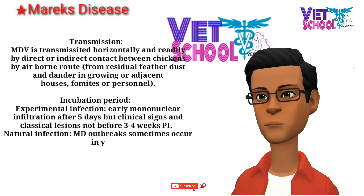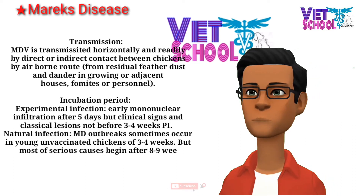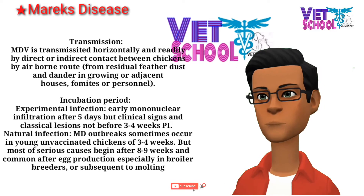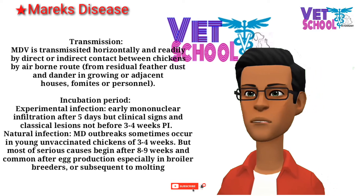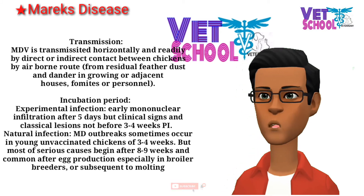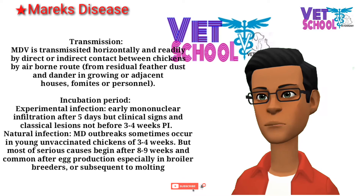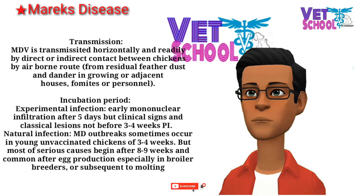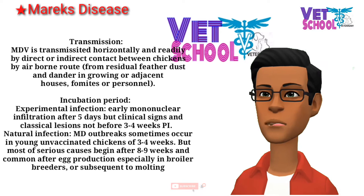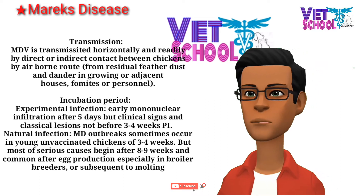Transmission occurs by airborne route from residual feather dust and dander in growing or adjacent houses, via mites or personnel. Incubation period: in experimental infection, early mononuclear infiltration occurs after five days, but clinical signs and classical lesions not before three to four weeks post-infection. In natural infection, Marek's disease outbreaks sometimes occur in young unvaccinated chickens of three to four weeks, but most serious cases begin after eight to nine weeks.